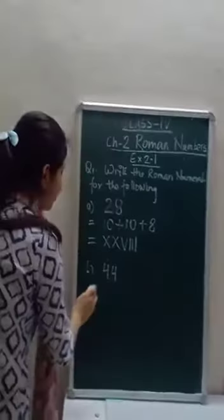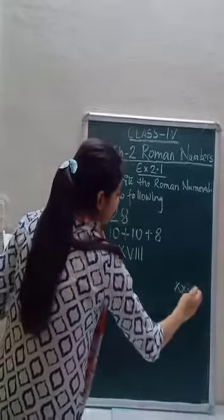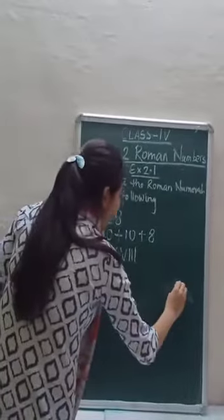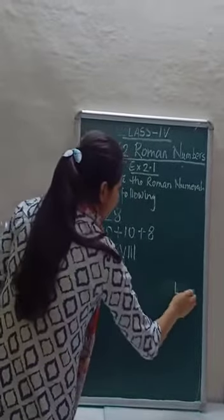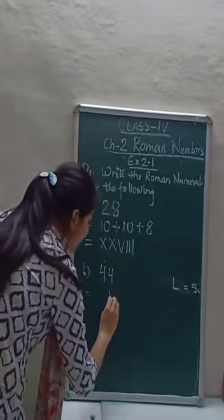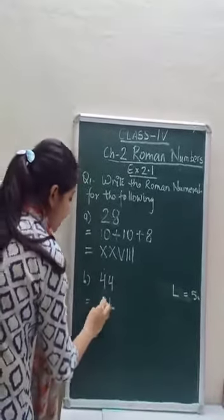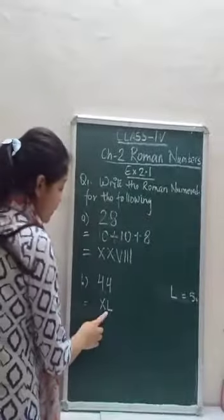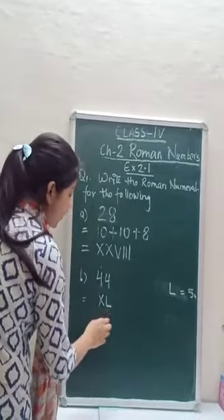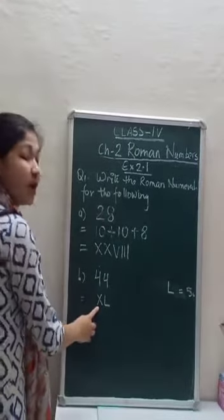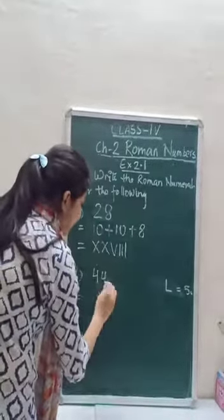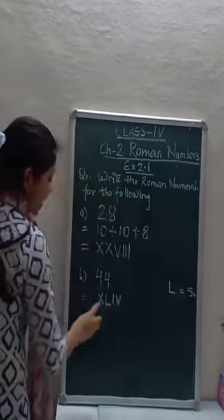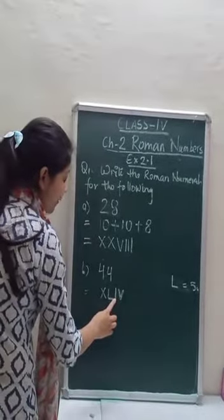Now for 44. As you all know, we cannot write XXXX for 40 — this is wrong. For 50 we use L, so L equals 50. If we write X to the left of L, it will be subtracted from the higher value: 50 minus 10 equals 40, which is XL. And for 4, we write IV — 5 minus 1 equals 4. So 44 in Roman numerals is XLIV.